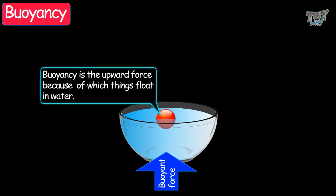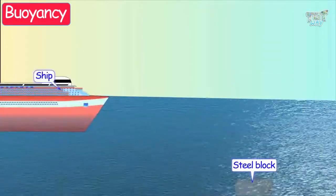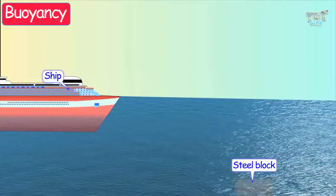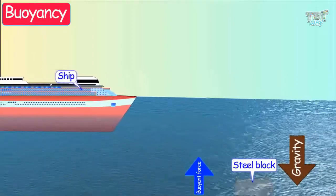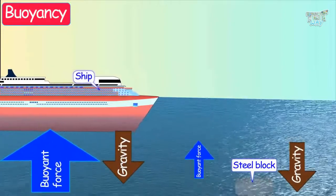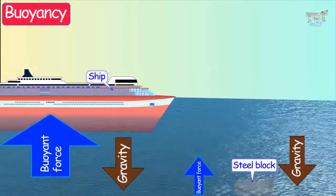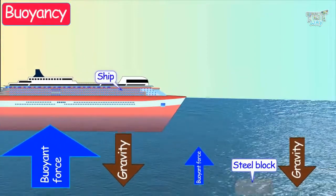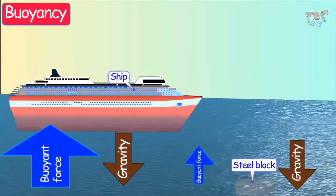Now the question is: why does a steel block sink in the water while huge ships float? Why is the buoyancy experienced by a huge ship so much that the ship is able to float on water? Now here comes the most important point that you need to learn about buoyancy.